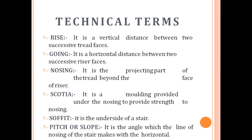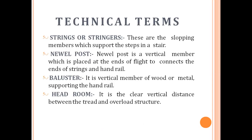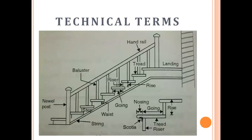If the slope is less, the number of steps increases. If the slope is more, it is difficult to ascend. The newel post is a vertical member placed at the ends of a flight to connect the ends. The baluster is a vertical member or board supporting the handrail. Headroom is the clear vertical distance between the tread and the overhead structure.